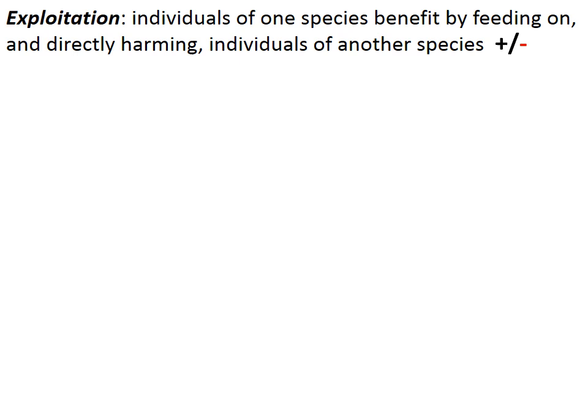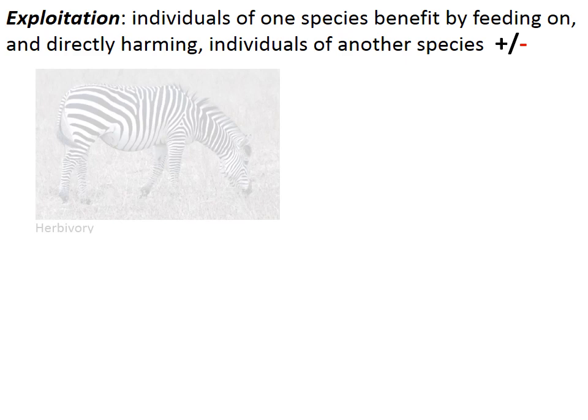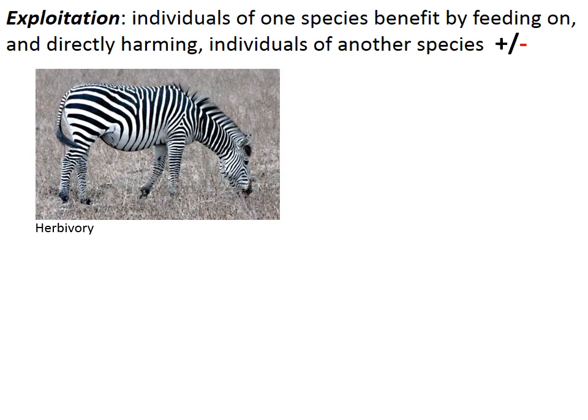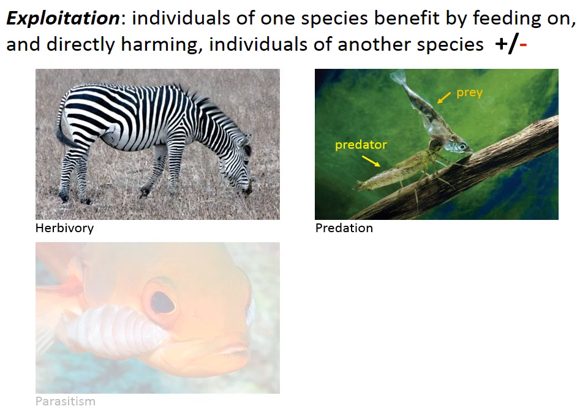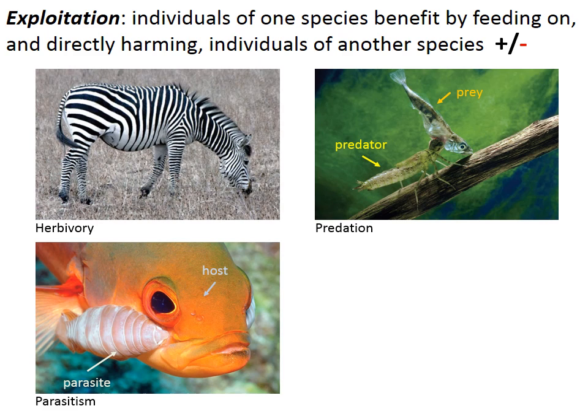Most exploitative relationships fit into one of three broad categories. Herbivores eat the tissue or internal fluids of living plants or algae, such as this zebra grazing on the grass. Predators kill and eat other organisms — their prey — such as this dragonfly larva that has caught a small stickleback. Parasites typically live in or on other organisms, their host, harming but typically not killing the host. This marine isopod is feeding on the tissue of a fish it has attached itself to.